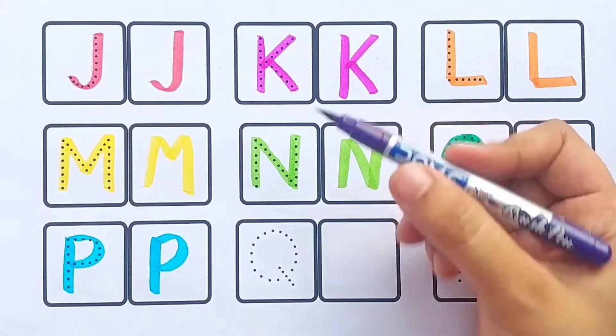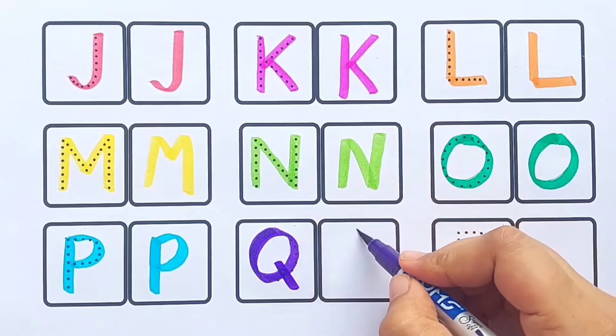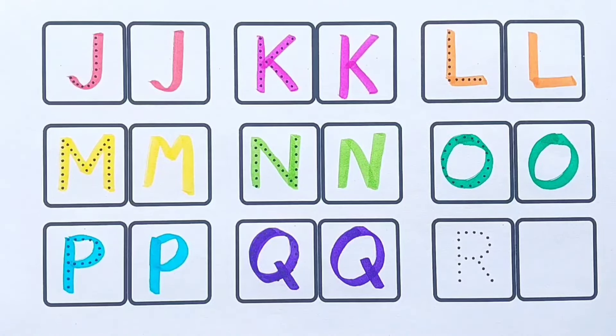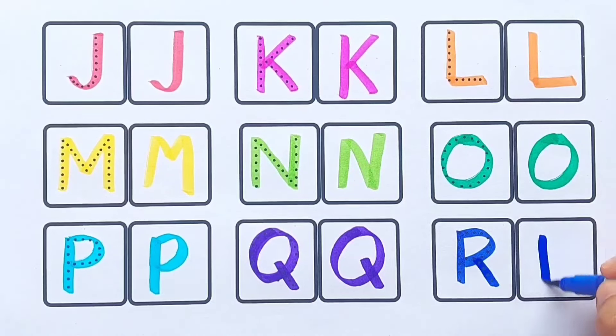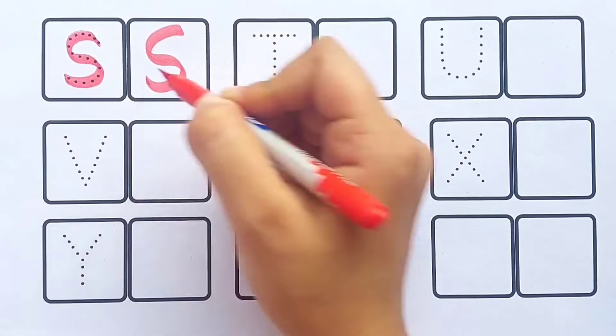Q Q for quilt, blue color. R R for rose, red color. S S for sun, pink color.